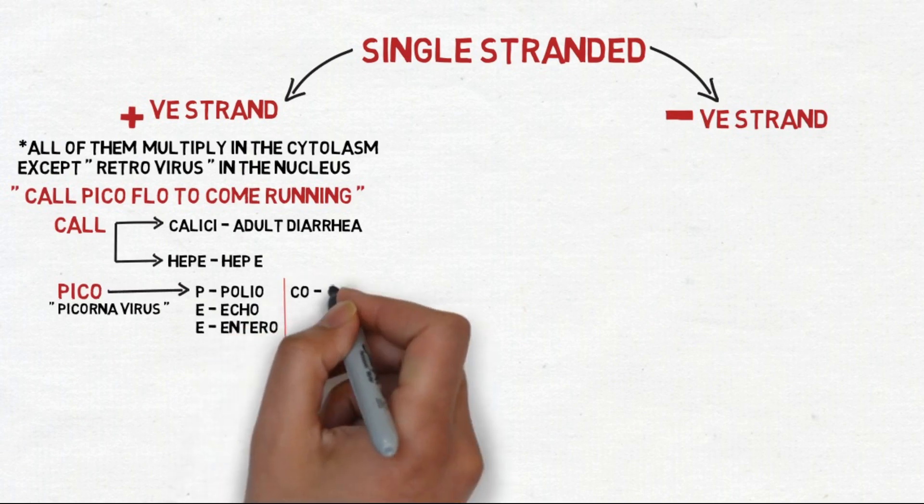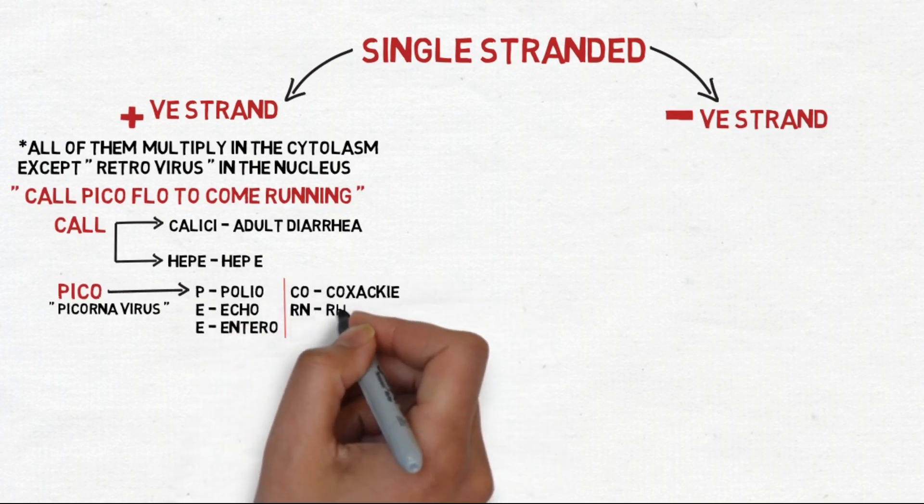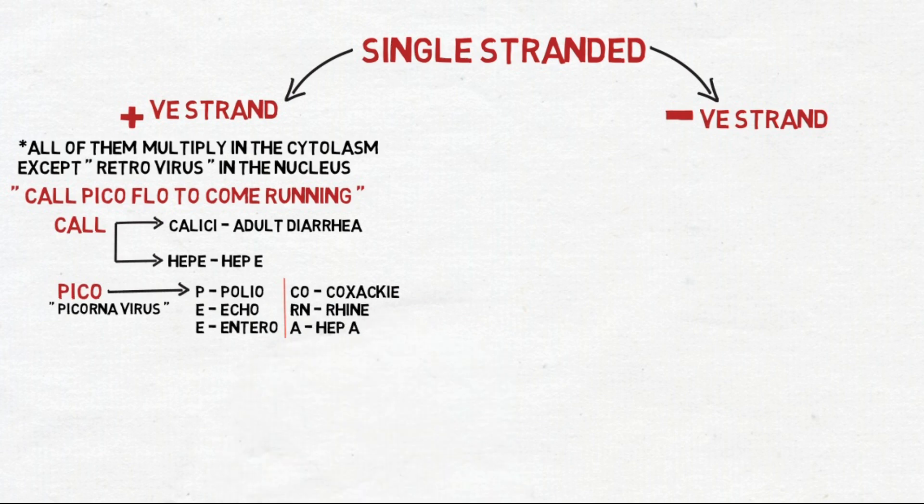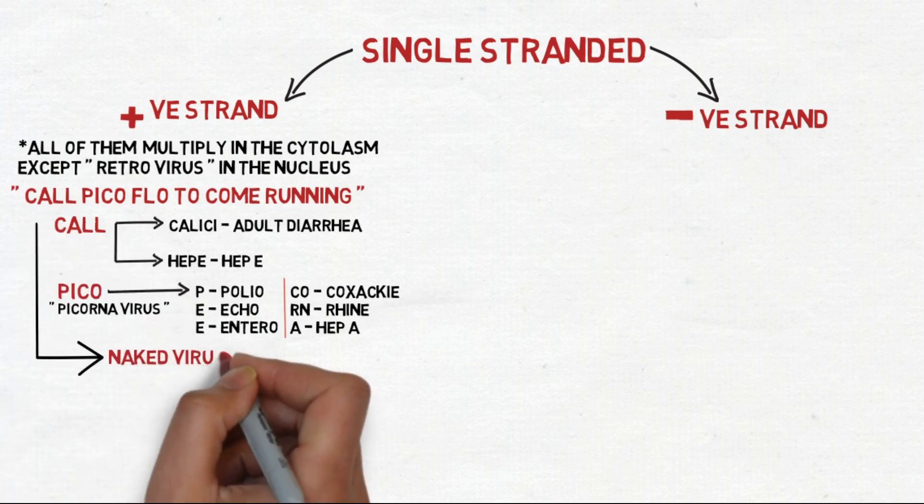Picornavirus includes P for Polio, E for Echo, C for Coxsackie, O for Rhinovirus, R for Rhinovirus, N for Rhinovirus, and A for Hepatitis A. PICORNA: P-E-C-O-R-N-A. Till now, all viruses species we mentioned are naked viruses.